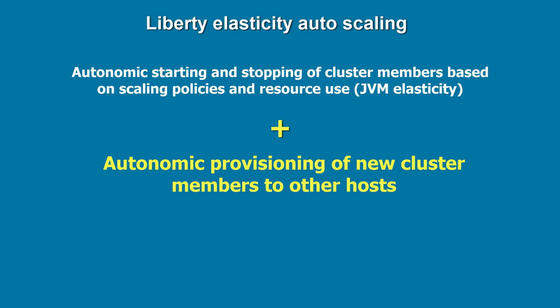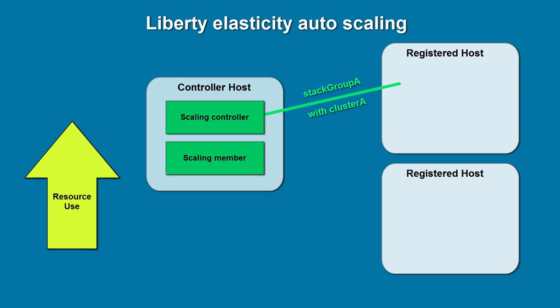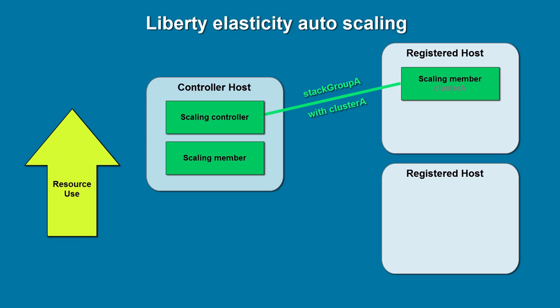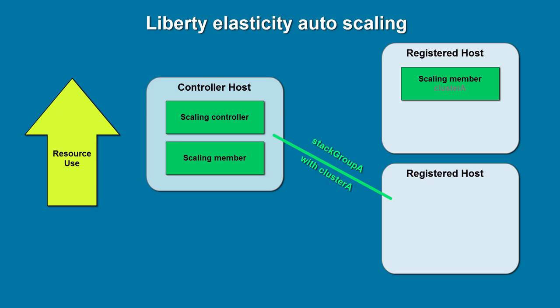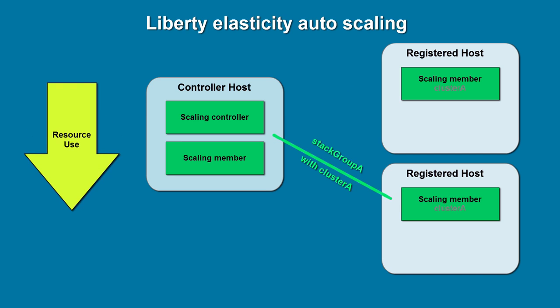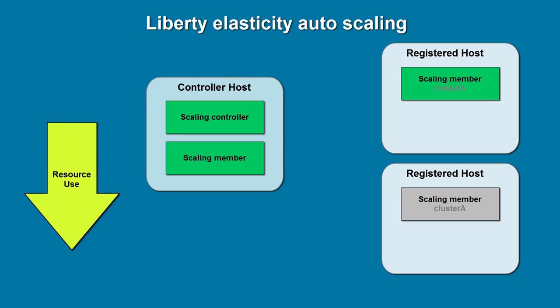But you also have autonomic provisioning of new cluster members to other hosts. Even if a host doesn't have a Liberty profile installed, Liberty Elasticity can autonomically install what's called a stack of Liberty software: the Liberty profile runtime, an IBM JRE, and a Liberty server with your applications.